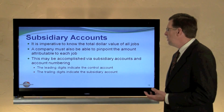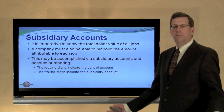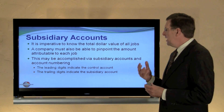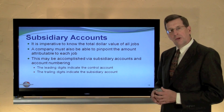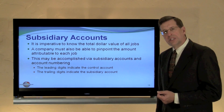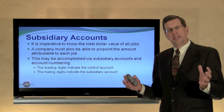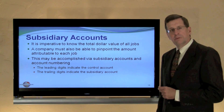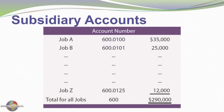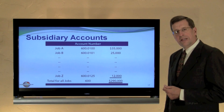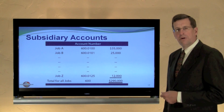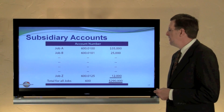This is the general ledger system, but we also need to think about maintaining subsidiary accounts. We can't just put all costs into one set of control accounts — for a business with hundreds of jobs ongoing, we need to identify how much cost is associated with each job. Similar to accounts receivable subsidiary ledgers, Job A (account 600.01) might have $35,000 in process, Job B $25,000, and so on, so that the total work in process of $290,000 is properly subdivided by specific job using account numbering sequences.